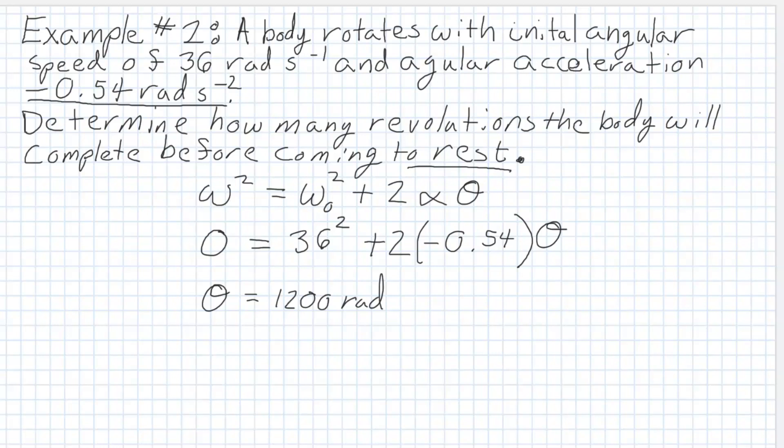We want to figure out how many revolutions that we have in these 1,200 radians, so I'm going to need to convert this into revolutions. I can do that by dividing it by 2 pi, and we get about 190 rotations or revolutions.